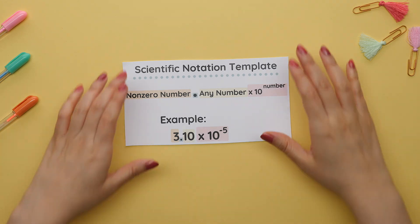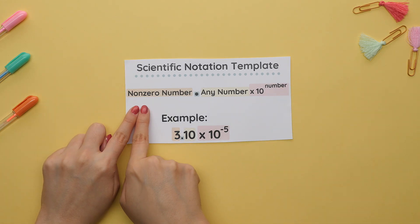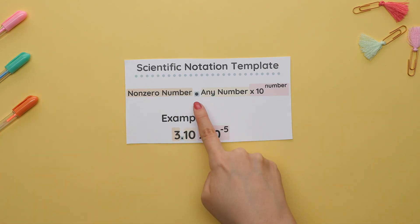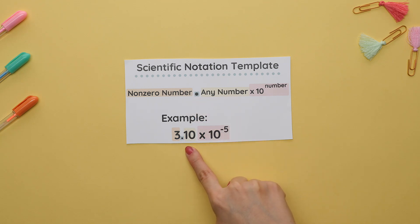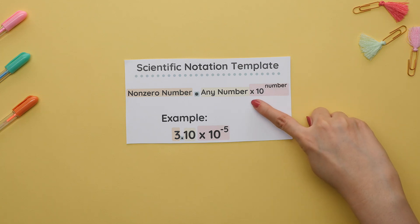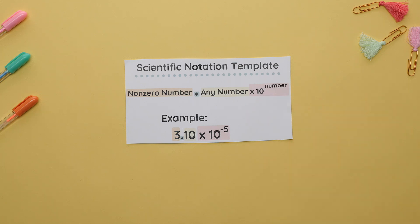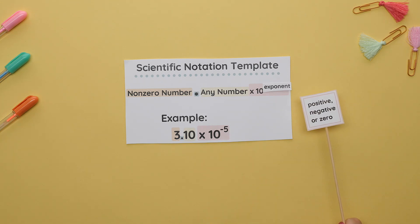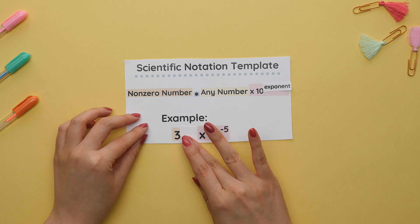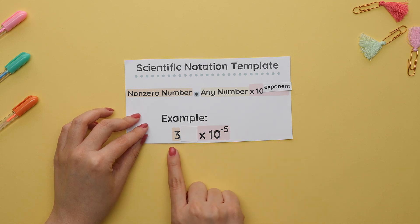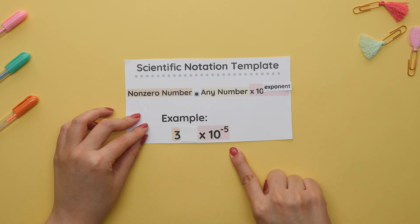We always start with just one number that is not zero. This number is then followed by a decimal and ends with one or more numbers. Zeros are fine in this location. This is all multiplied by 10 raised to a number. This exponent can either be positive, negative, or zero. You may also see scientific notation where there is only one number multiplied by 10 raised to an exponent.